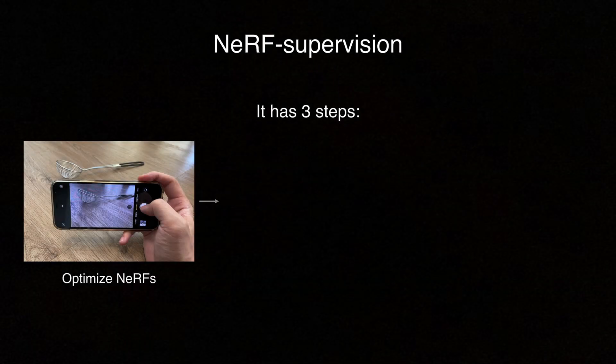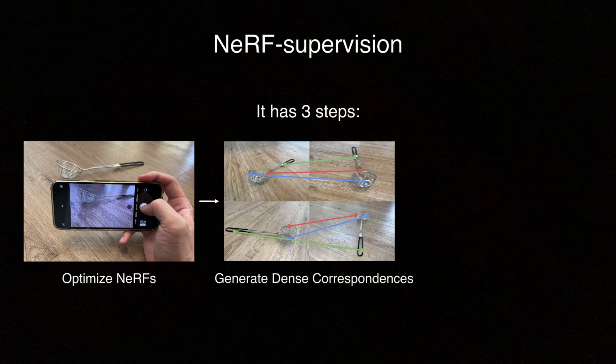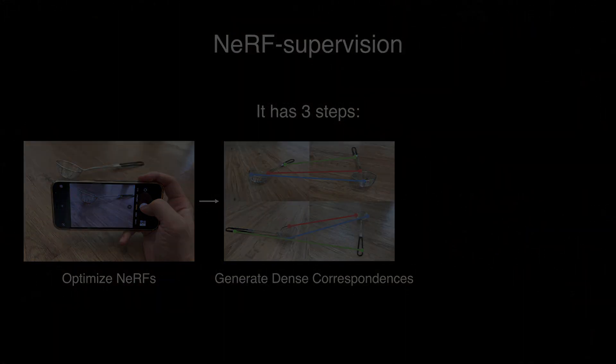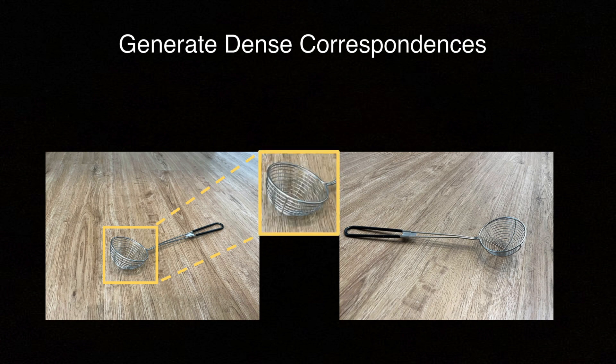The second step of our pipeline is to generate a dense correspondence dataset from NeRF. We'll use two views to explain the idea, but it can be easily generalized to multiple views. First, we use NeRF to synthesize two RGB images of the scene. For clarity, let's zoom in on the left image.